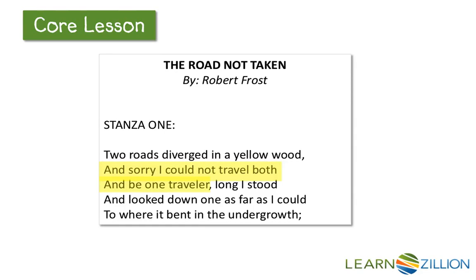It seems to me that the speaker here is someone who is trying to make a decision. In lines two to three, the speaker tells us that he or she is upset that they are only one person and cannot be in two places at once. So the speaker just looks down both roads and strains to see as far as possible.